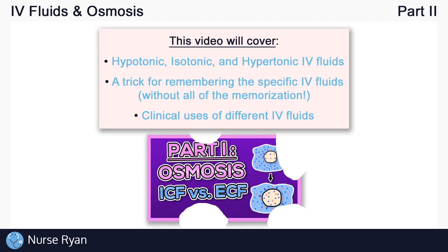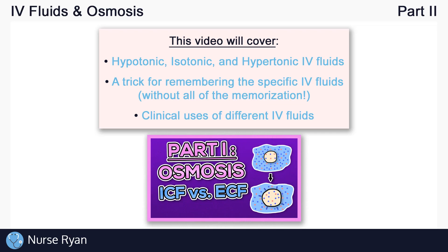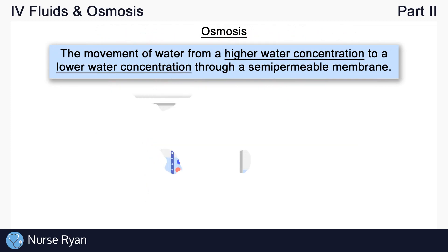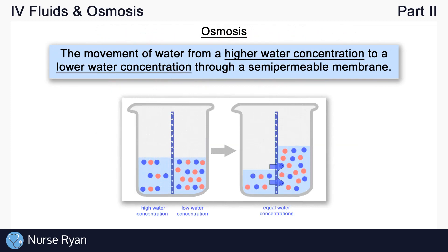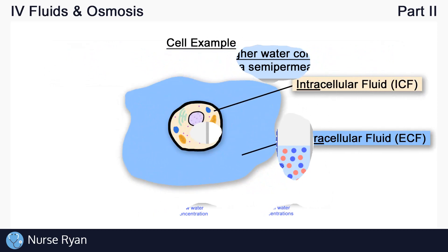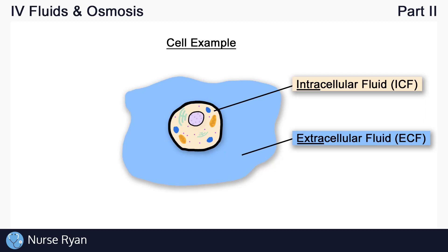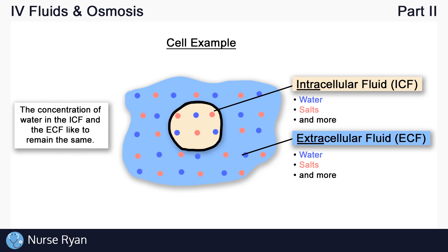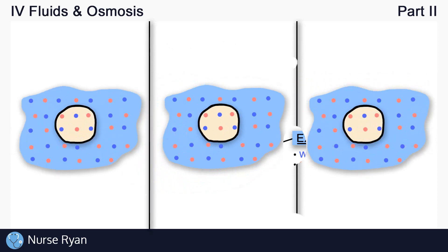I definitely recommend watching the first video on osmosis if you aren't already familiar with the concept. To recap, osmosis is the movement of water from a higher water concentration to a lower water concentration through a semi-permeable membrane. Here's our little cell again. We have extracellular fluid and intracellular fluid, and they always like to maintain a nice balance of water and salts, especially the water concentration — it likes to remain the same on the inside and outside of the cell. Now we'll explore what happens when we place a cell into three different types of environments or solutions.